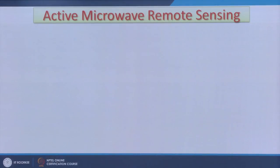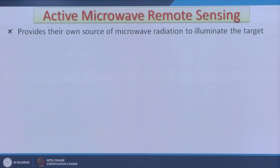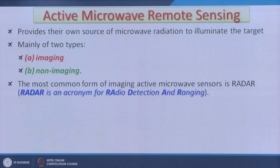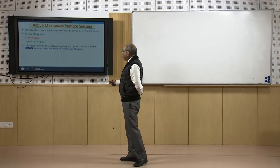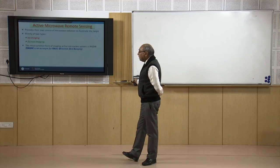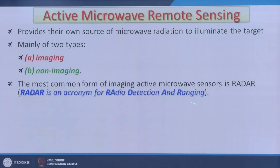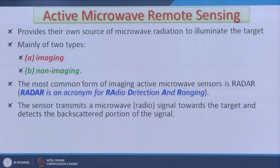The popular form is active microwave, which provides its own source of microwave radiation to illuminate the target — the source comes from the sensor itself. There are two types of sensor systems: imaging and non-imaging. The most common form of imaging active microwave sensor is radar. RADAR stands for Radio Detection And Ranging, so radar remote sensing is essentially a ranging technique, and everything else is derived from that.